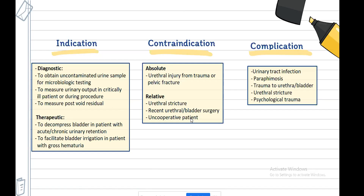Complications of catheterization include urinary tract infection, paraphimosis, trauma to the urethra or bladder, urethral stricture, and psychological trauma.